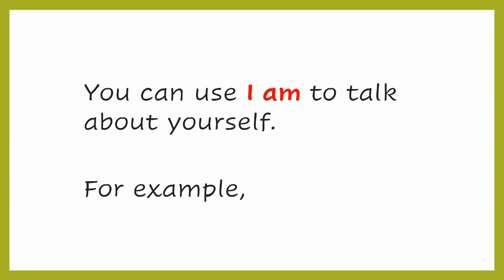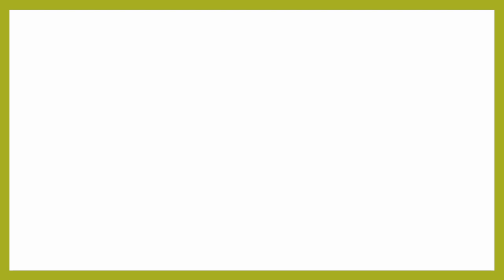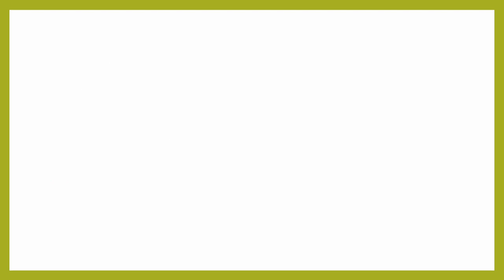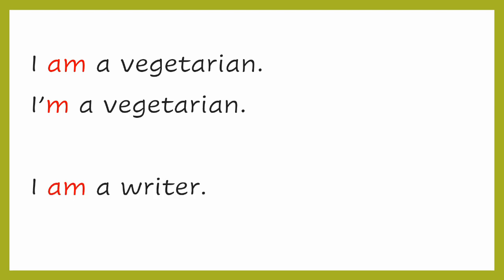For example: I am Niha — notice, I and AM are spoken together: I'm. I am from Delhi — I'm from Delhi. I am a vegetarian — I'm a vegetarian. I am a writer — I'm a writer. I'm a teacher. I'm an artist.